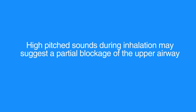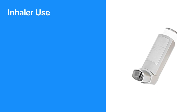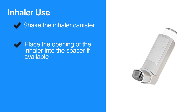Individuals who have asthma or chronic lung disease are generally familiar with how to use their breathing medications, such as inhalers. To help an individual use an inhaler, first tap the inhaler canister, then place the opening of the inhaler into the spacer, if available.